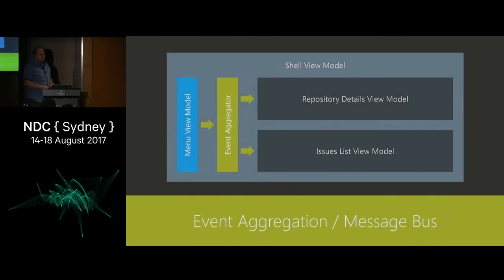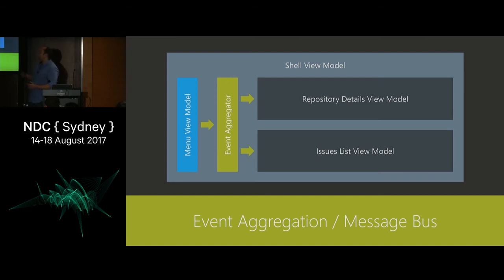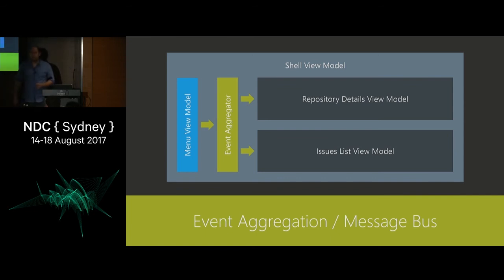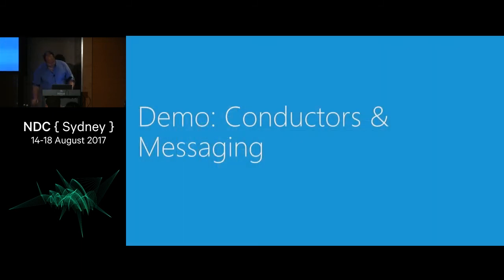In this example, the menu view model is pushing messages to our event aggregator, which then pushes them onto the repository details and issues list. Our view models only need to depend on that event aggregator — they don't need to depend on each other. They're not tightly coupled, which means we can push messages from other places that mimic the same thing as clicking something on the menu view.